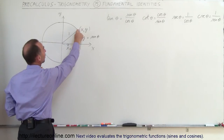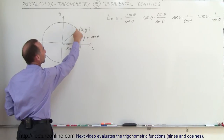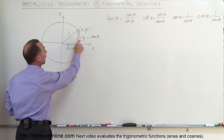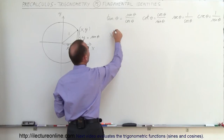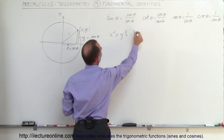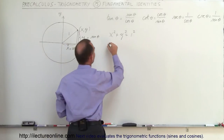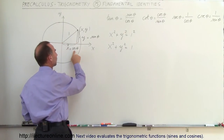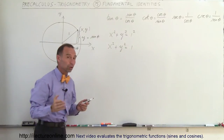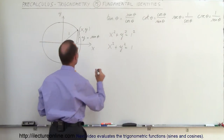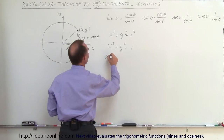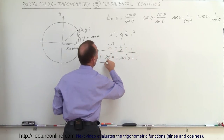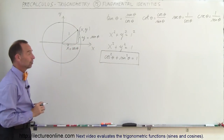The x value of a point on the circle is equal to the cosine of theta, and the y value on the circle is equal to the sine of theta. From the Pythagorean theorem, x squared plus y squared equals 1 squared, which equals 1. Replacing x with cosine of theta and y with sine of theta, we get cosine squared theta plus sine squared theta equals 1 — and that is our first basic identity.